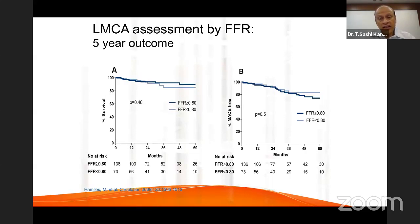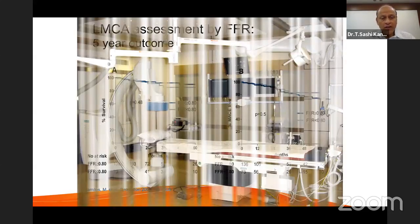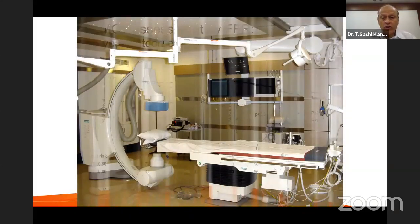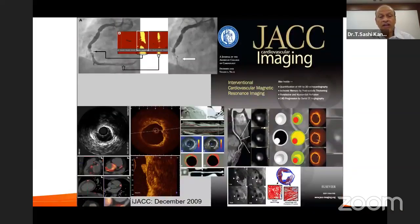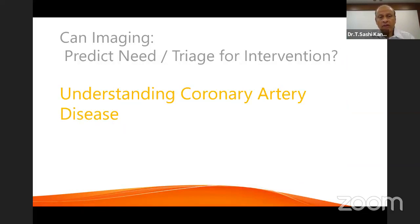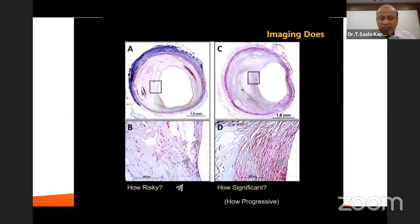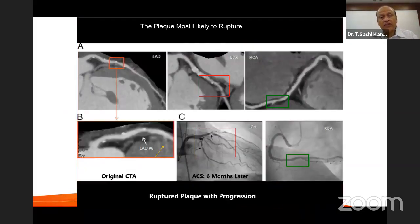In the cath lab today, one can perform angiography, intravascular ultrasound, optical coherence tomography, and other imaging modalities. These imaging technologies can predict the need for intervention and triage a patient for surgery, PCI, or medical management. We can understand coronary disease with much more clarity, including the thickness of the fibrous cap — whether it is a thin-cap fibroatheroma or a thick-cap fibroatheroma.